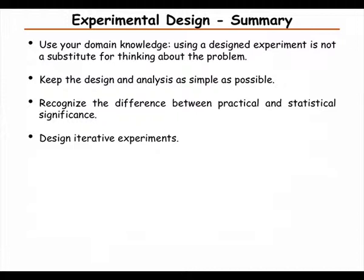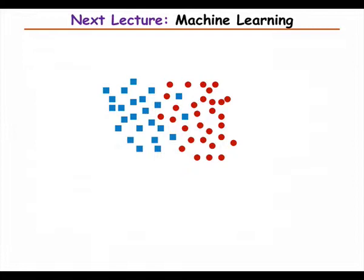Keep both the design and analysis as simple as possible, and do iterations of many simple experiments. Also, there is a difference between practical and statistical significance — even if you find something statistically significant, the effect might be so small it's not of interest. That's the end of the lecture today. Next week you're going to learn about machine learning from Yin: when you have different groups — blue and red labels — and two measurements, you want to be able to separate these as well as possible.